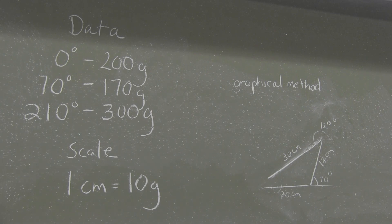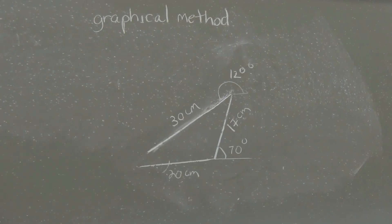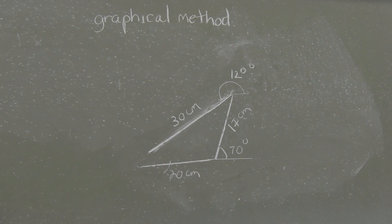I've used a scale of 10 grams equals one centimeter. On the right is the graphical method diagram. My first vector is at zero degrees, 20 centimeters. The second vector is at 70 degrees, 17 centimeters. The third vector at 120 degrees is 30 centimeters. The portion between the end of the third vector and the beginning of the first vector is the vector I am interested in. That is our resultant vector.